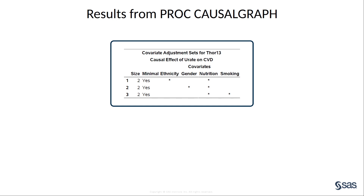For example, you could use the first adjustment set and adjust for ethnicity and nutrition. If you were to stratify your analysis by these variables — for example by matching — then the resulting estimate for the effect of urate on CVD would have a valid causal interpretation. It is important to recognize that this identification strategy is valid only if the causal graph you input into PROC CAUSALGRAPH is an accurate representation of the data generating process.